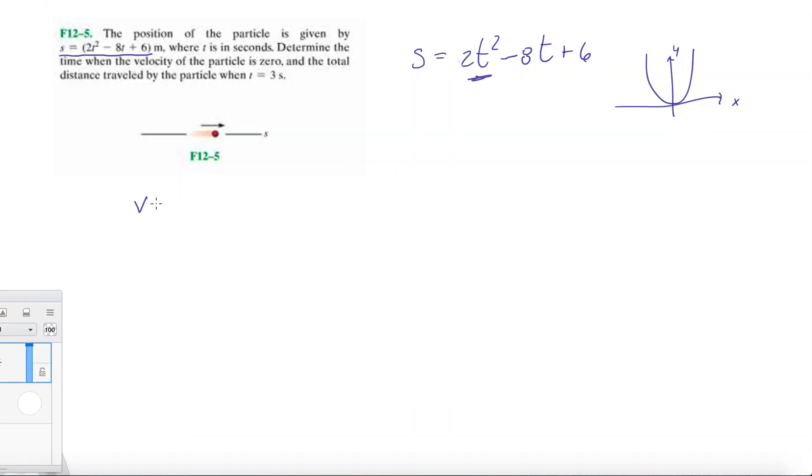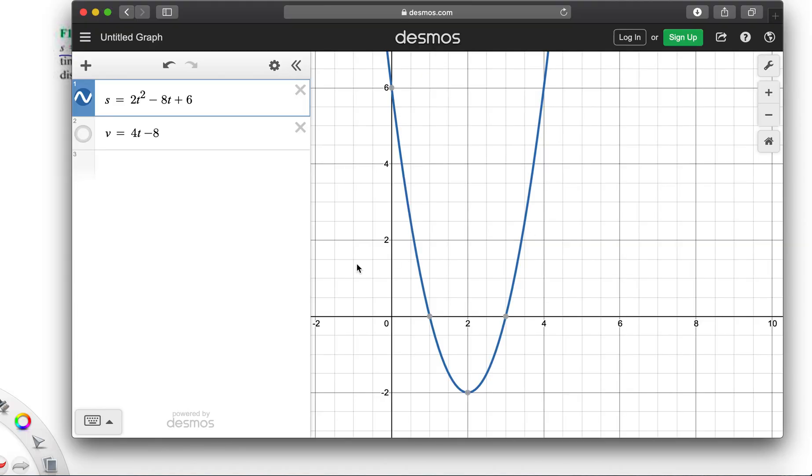But let's say you're just using your equations. You have velocity equal to dS/dt, which we just take one derivative with respect to time, or one time derivative. And then we get that this is equal to 4t minus 8. So let's see what that looks like.